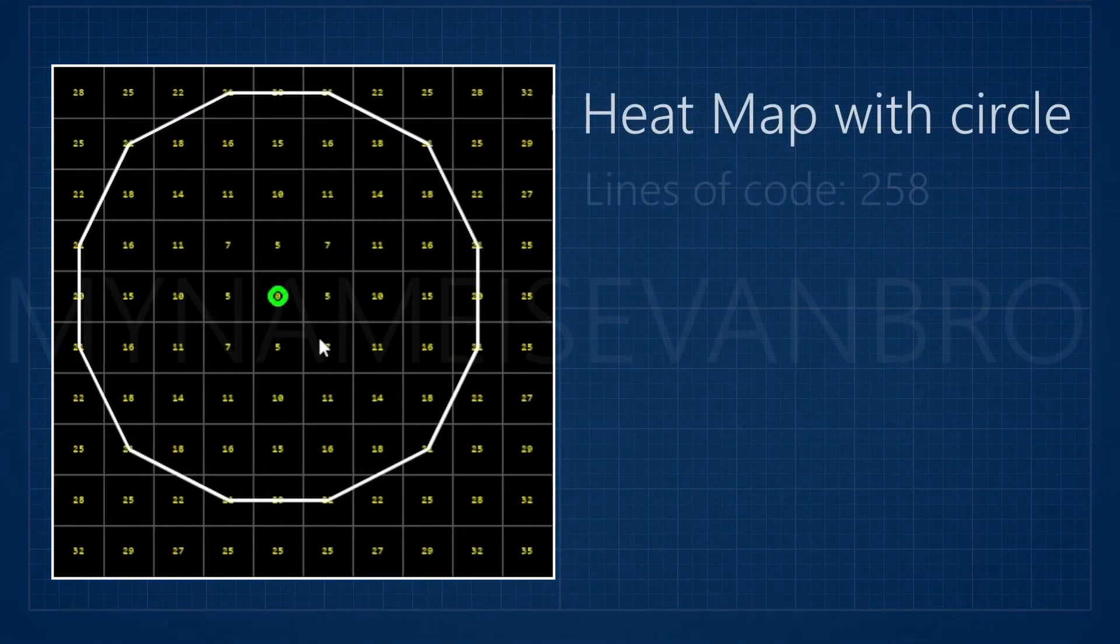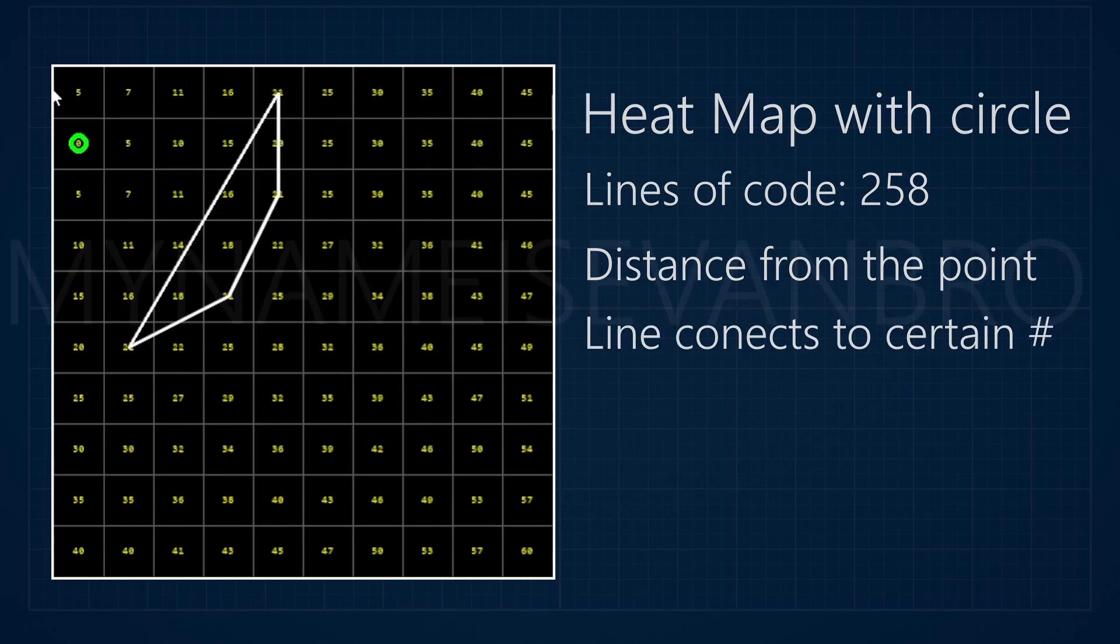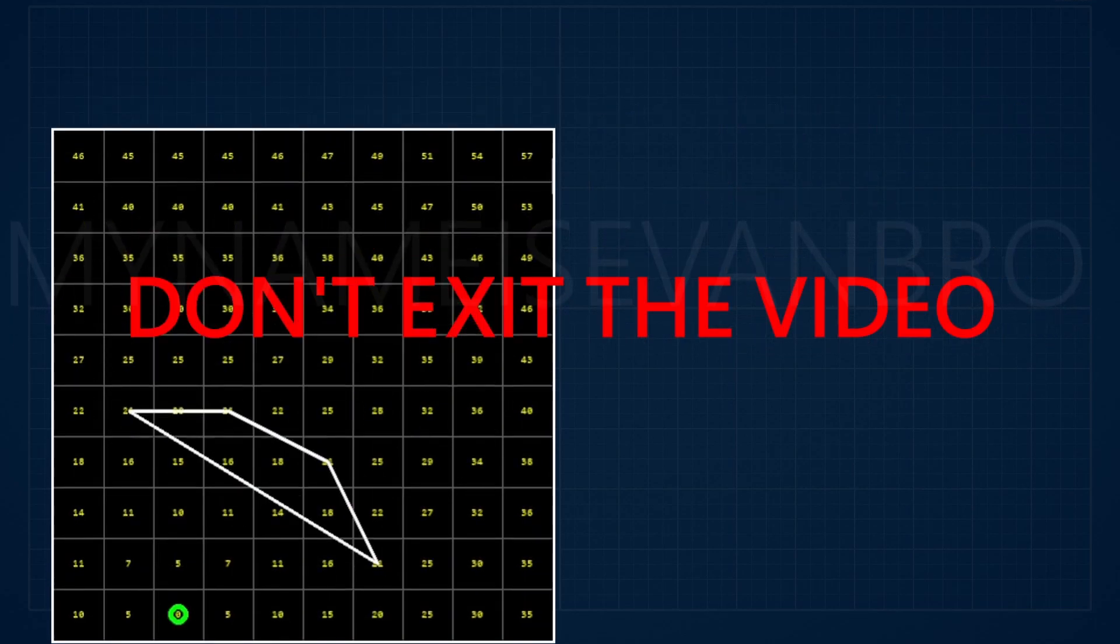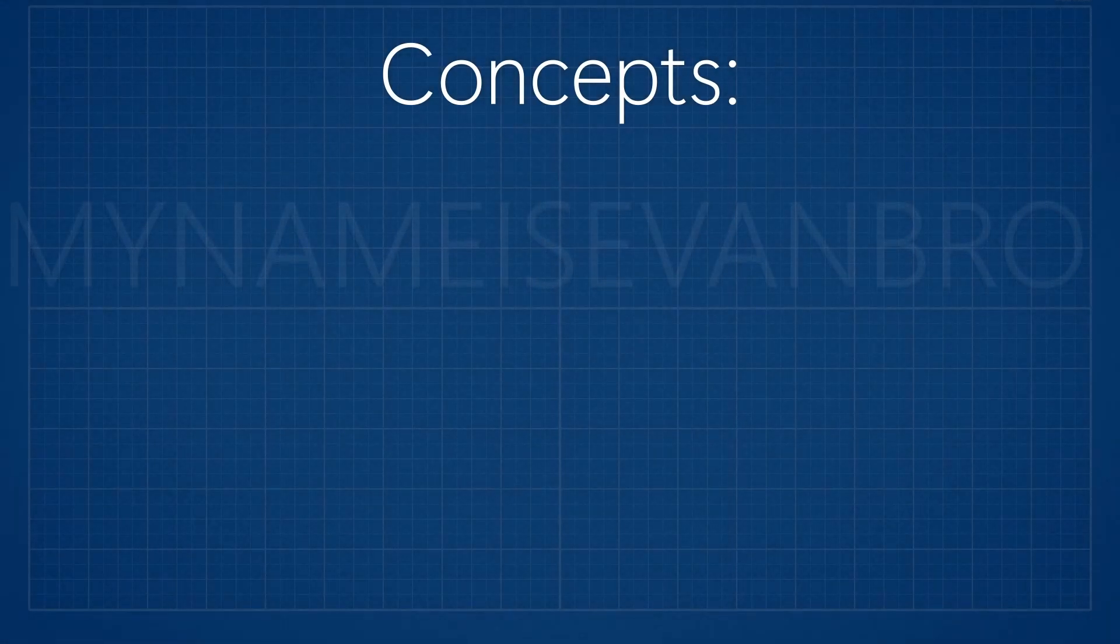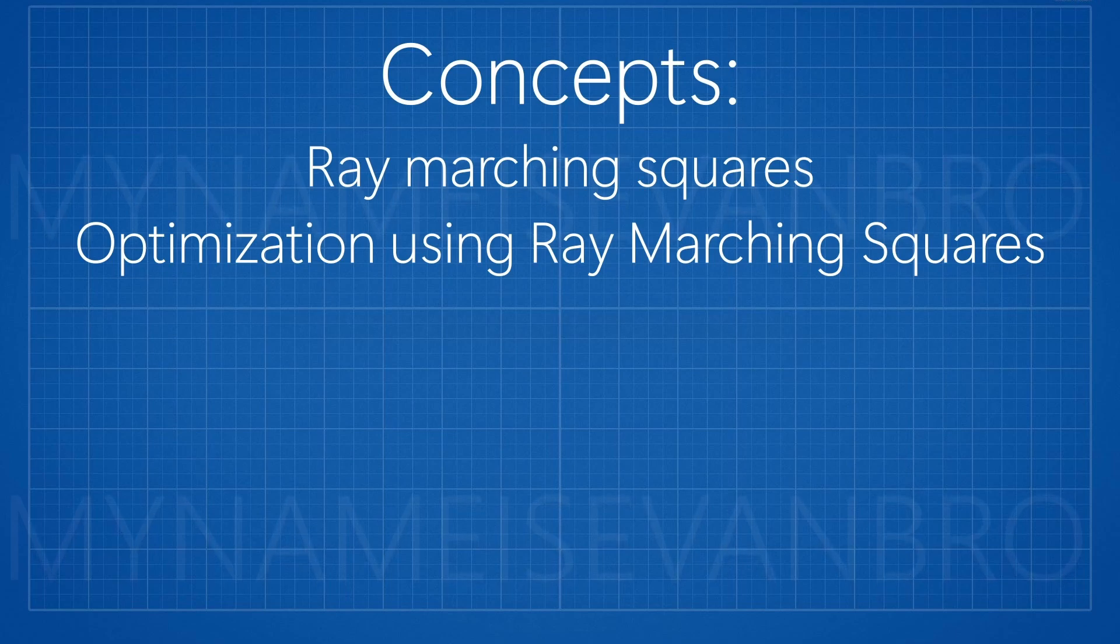Making this program that connects the lines took a lot longer than I would like to admit due to one little mistake. This is essentially how this works, but don't exit the video. If you want to code this, you must know several more concepts like marching squares, optimization using marching squares, and how to cook a burger. Okay, maybe not the last one.